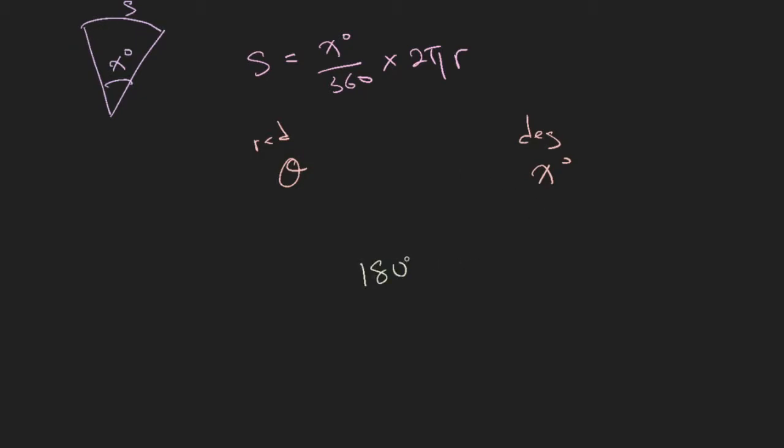Now, we know that 180 degrees is equal to pi radian. So X degrees will be pi over 180 degrees times X. So this will be your theta.